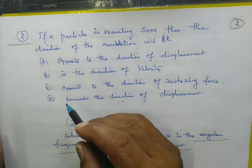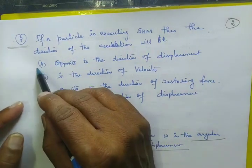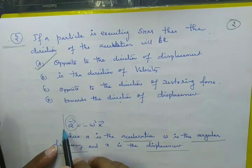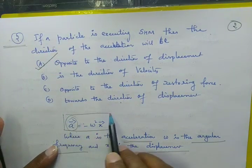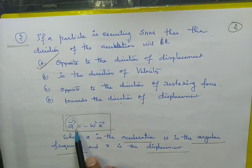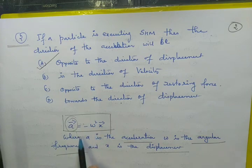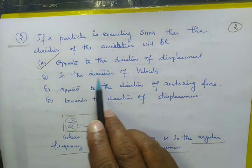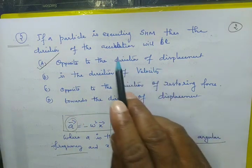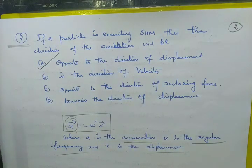Since A equals minus omega squared times x, the negative sign indicates that the acceleration is opposed to the direction of displacement. Therefore, the correct answer is: opposed to the direction of displacement.